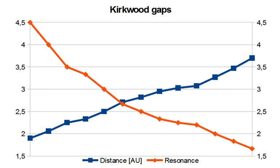unlike the mean motion resonances of Neptune or Jupiter's 3-to-2 resonance, that retain objects captured during the giant planet migration of the NICE model. The loss of objects from the Kirkwood gaps is due to the overlapping of the Nu-5 and Nu-6 secular resonances within the mean motion resonances.